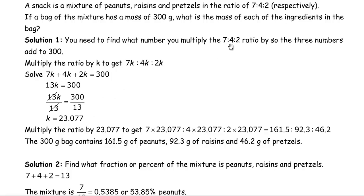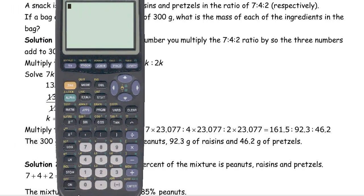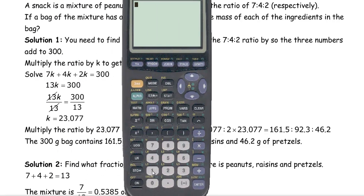So that's the number we're going to multiply the 7, 4, and 2 by. We're going to multiply the ratio by that 23.077. So 7 times that is 161.5, 4 times 23.077 is 92.3, and 2 times 23.077 is 46.2. And so the 161.5 grams is the mass of the peanuts, the 92.3 grams is the mass of the raisins, and the 46.2 grams is the mass of the pretzels. And we can check to make sure that this all makes sense. If we add 161.5 and 92.3 and 46.2, notice it does add up to exactly 300 grams.